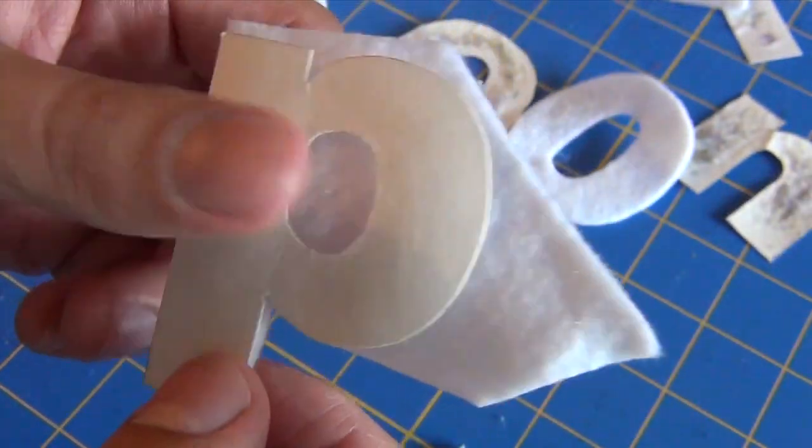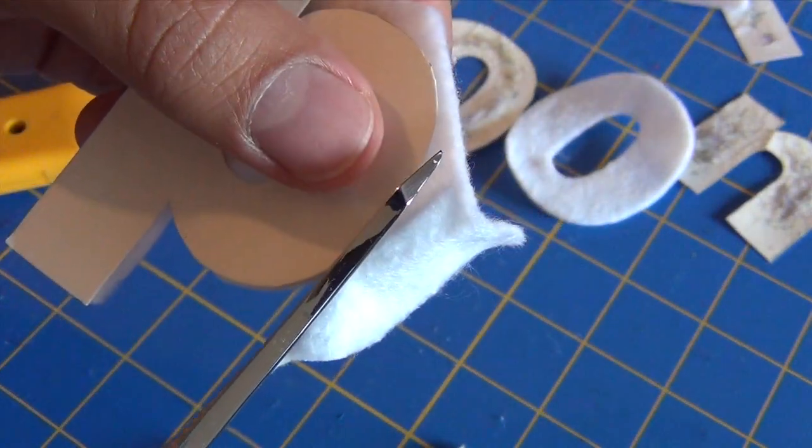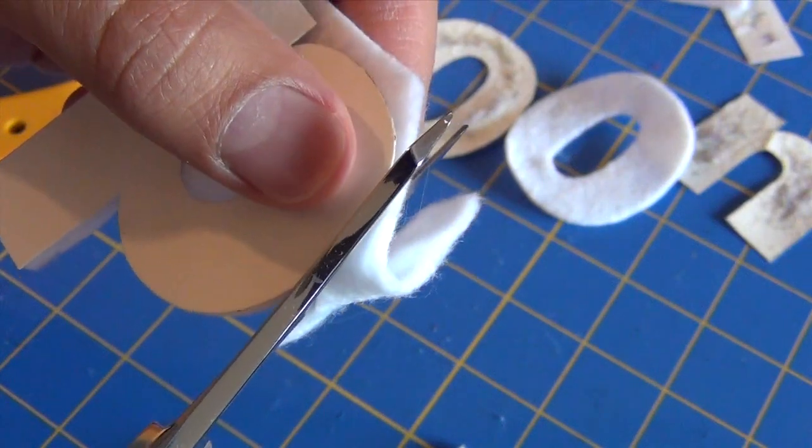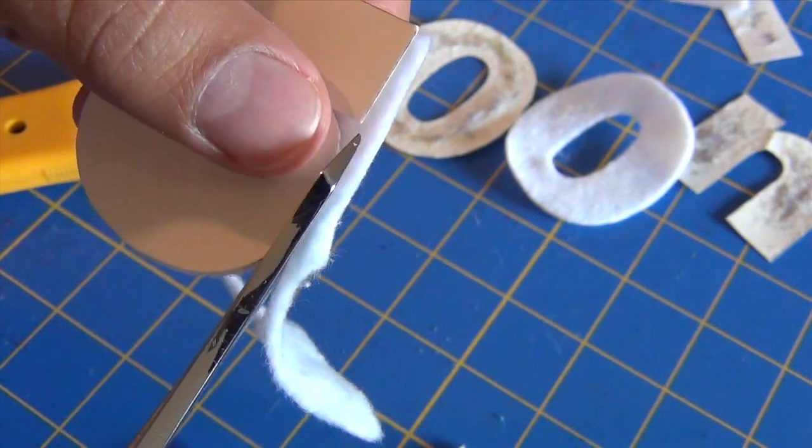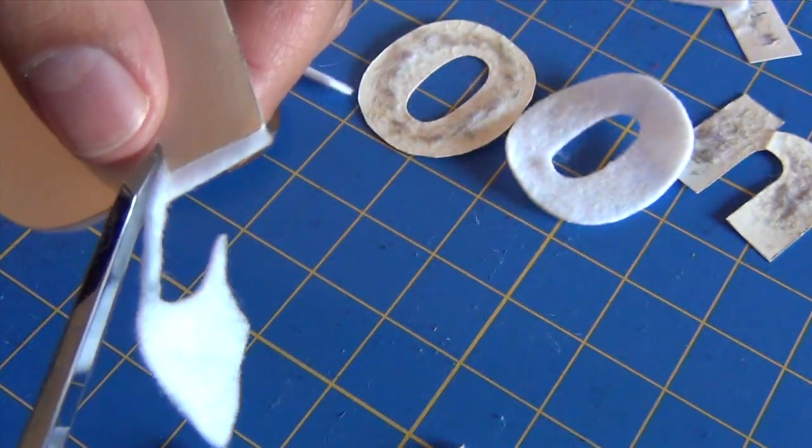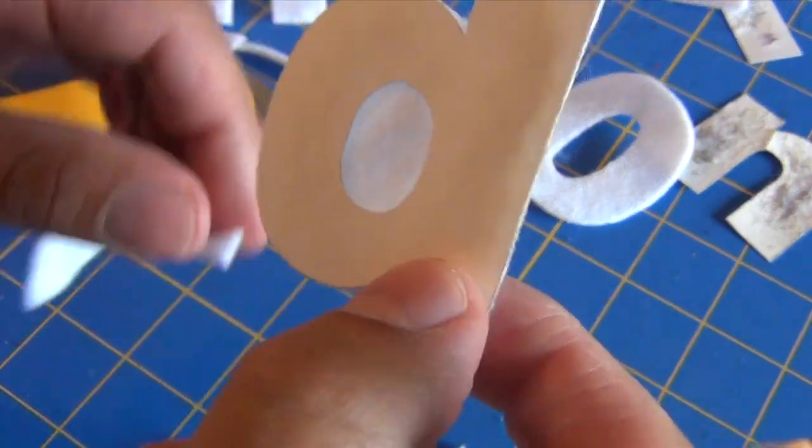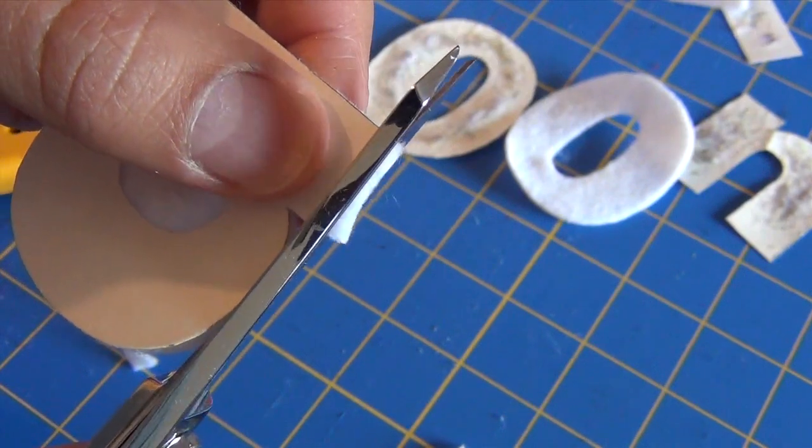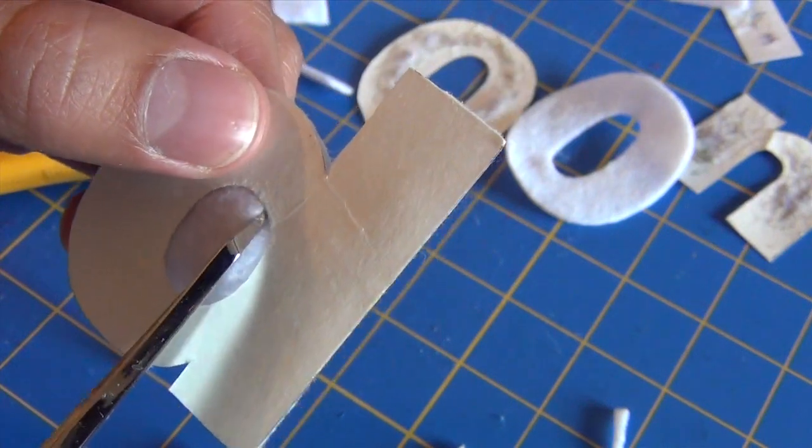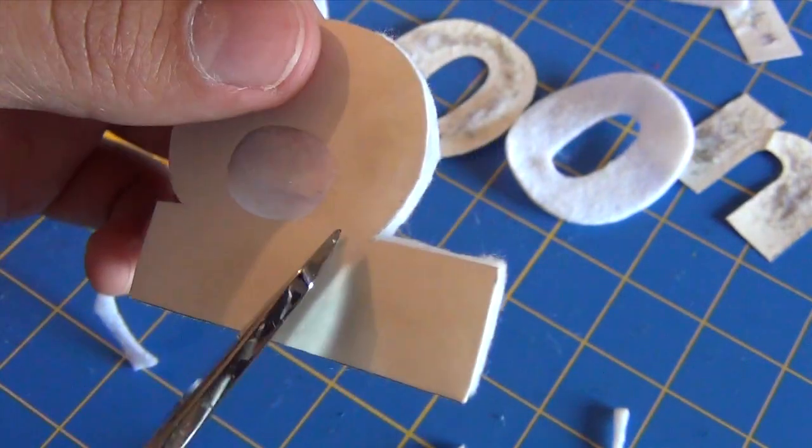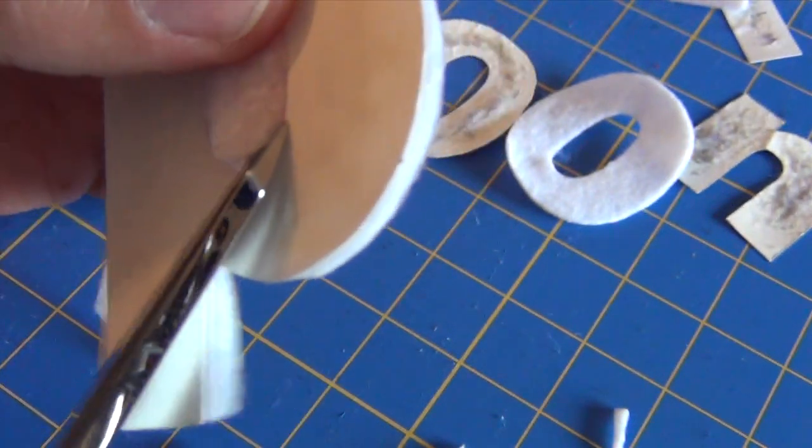When I first started doing the chat pillows, which is back in, I believe, 2009, we were using felt for everything. So we were using felt for the main part of the pillow, which is what we use for all our pillows still. Which is, or did I say felt? I meant fleece. We're using fleece. But we're also using fleece for the letters. And after kind of thinking about it and kind of experimenting with other materials, we realized that felt would have been much better.